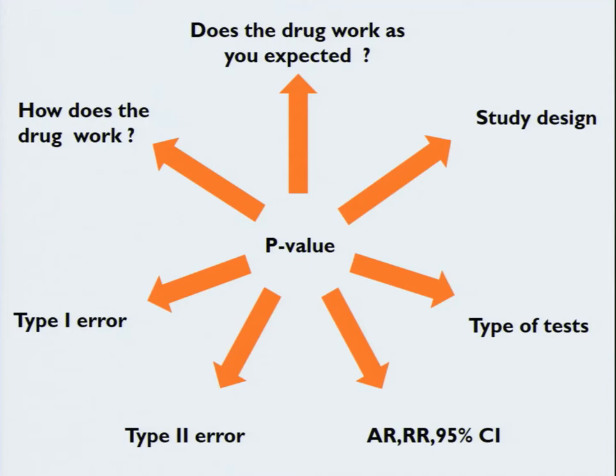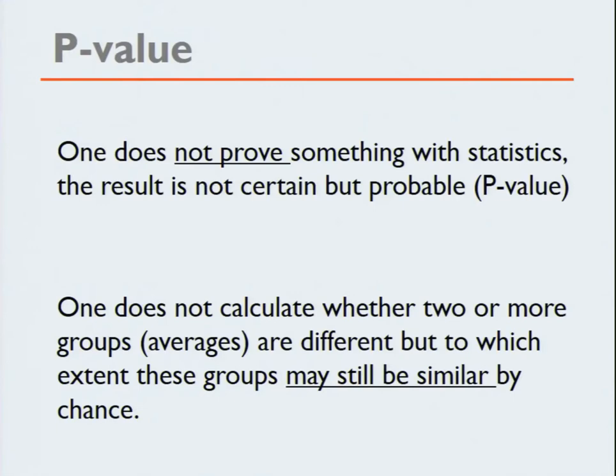When I was a medical student, I always looked first, like everybody, to the p-value. But what is much more important beside the p-value — and we will see how the p-value is calculated — is much more than the surrounding around the p-value. So we'll go to type 1 errors, type 2, absolute risk, and type of test. What is important to know about statistics is that one does not prove something with statistics; the result is not certain but probable.